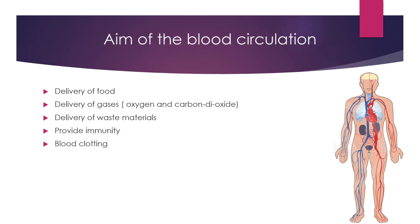The next one is immunity. WBC, or white blood cells, are a very important component of the blood which provide protection from foreign particles — that is the defense system of our body, meaning our immunity power. The last one is blood clotting. With the help of blood, it stops the continuous flowing or release of blood from damaged parts of our body.